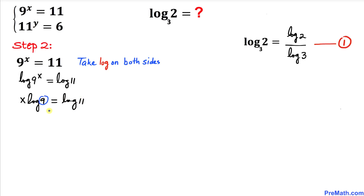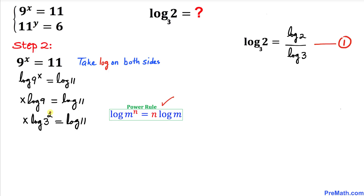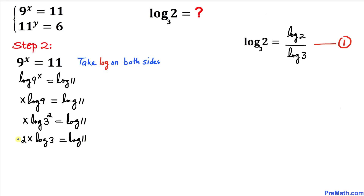Now let's focus on the 9. We can write 9 as 3 squared, so this becomes x times log of 3² equals log of 11. Applying the power rule again moves the exponent 2 to the front: 2x times log of 3 equals log of 11. Dividing both sides by 2x gives log of 3 equals 1 over 2x times log of 11. Let's call this equation number 2.